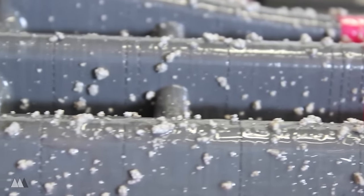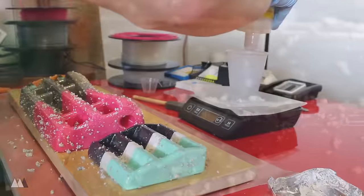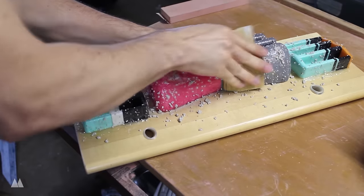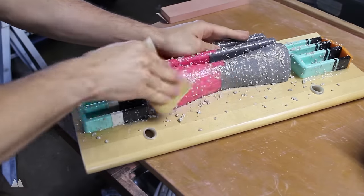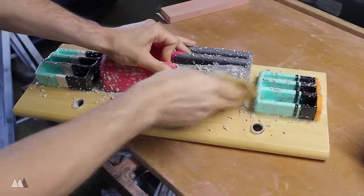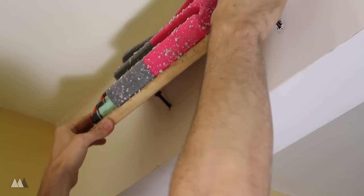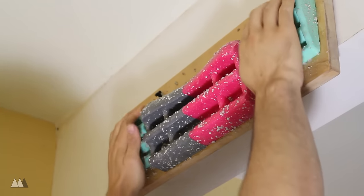And to make sure the sand really stuck on, I whipped up another batch of this XTC 3D and did another thin coat over everything. Then I used some 80 grit sandpaper to just dull down some of the really sharp points. And after giving all that epoxy 24 hours to fully cure, I was ready to test out my hangboard.